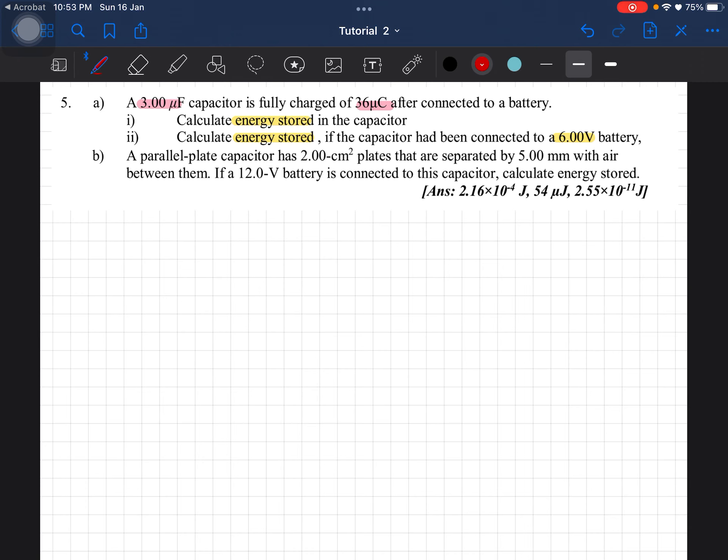So to calculate the energy stored, we will be using the formula U equals Q squared over 2C. From the question, we know that the charge is equal to 36 microcoulombs over 2 times the capacitor, which is 3 microfarads. So this is going to be equal to 2.16 times 10 to the negative 4 joules.